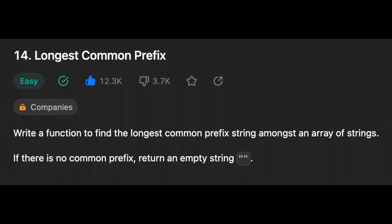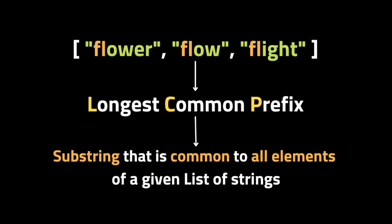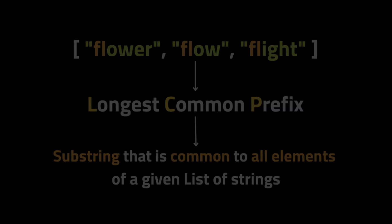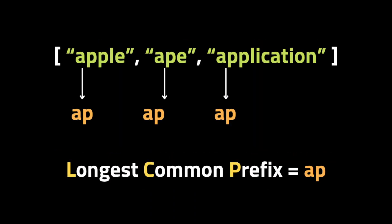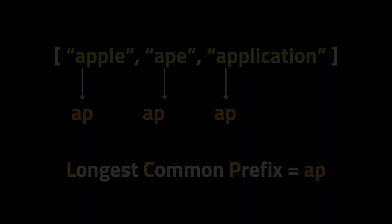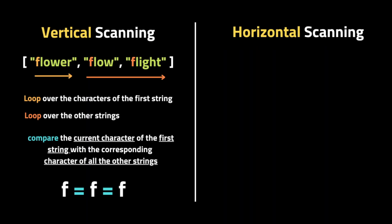Hello guys, hope you are all doing well. In this video we'll be solving LeetCode 14, Longest Common Prefix. The problem gives you a list of strings and asks you to return the longest common prefix. The LCP is a substring that is common to all elements of a given list of strings. For example, if we have this input list of strings, the longest common prefix is 'ap'.